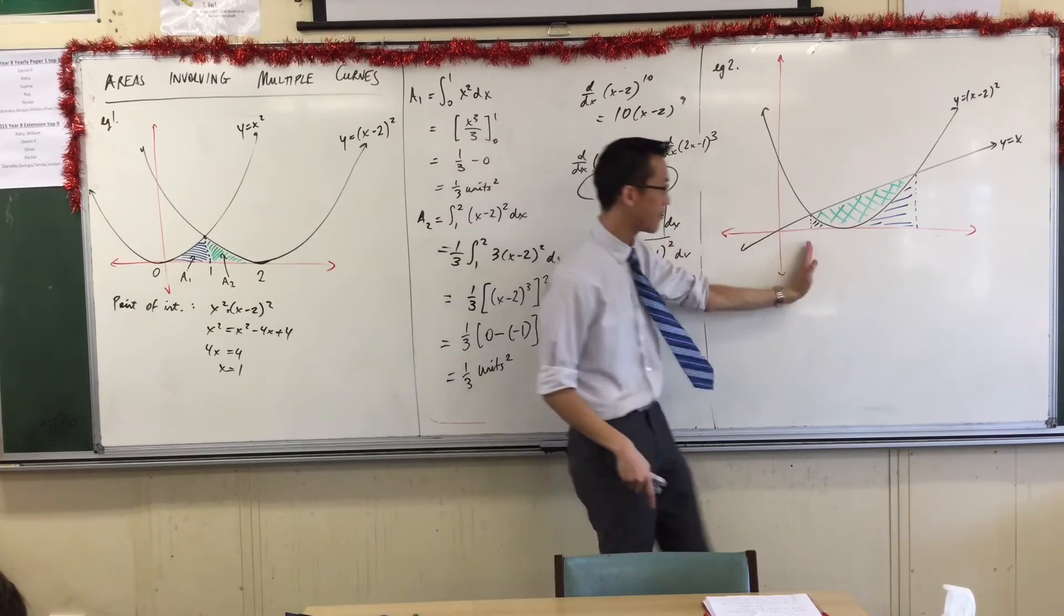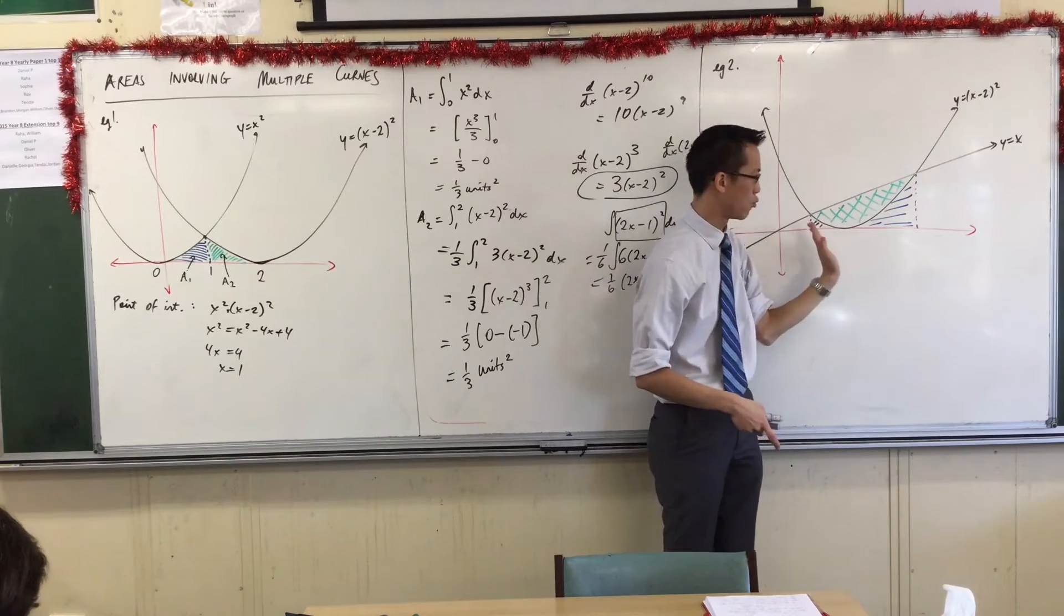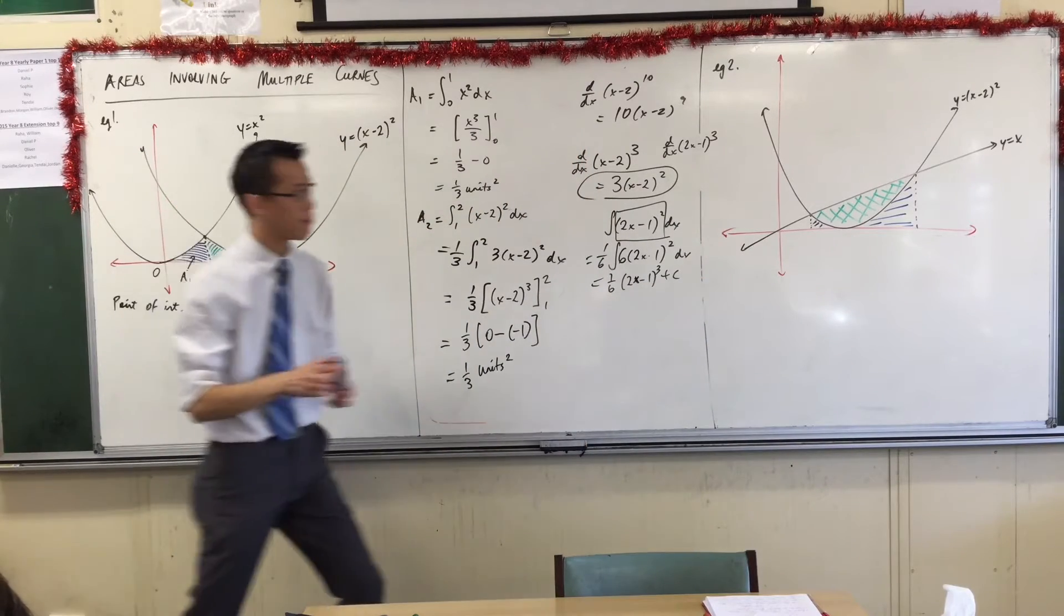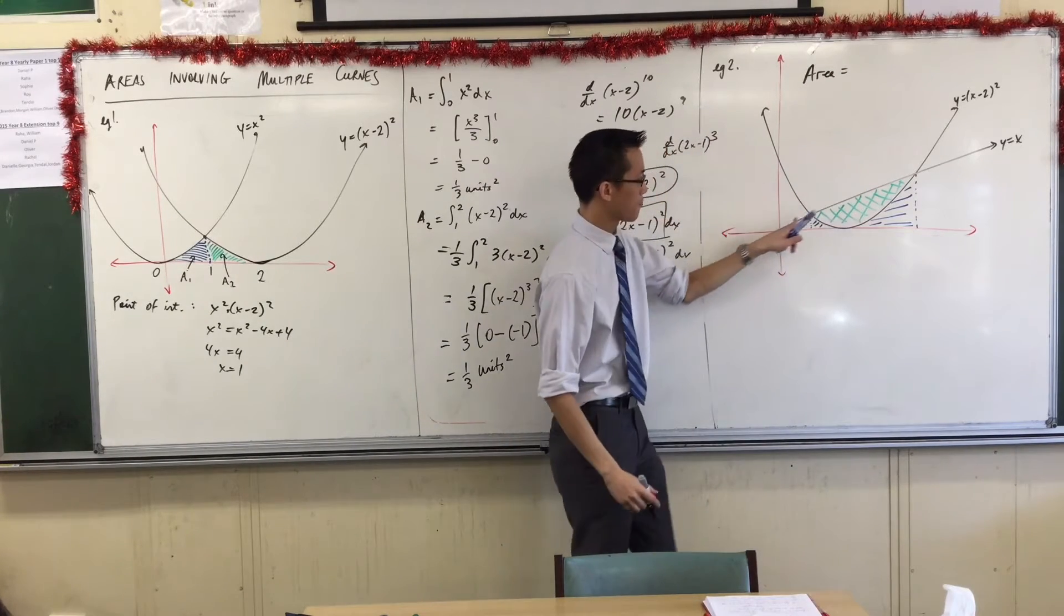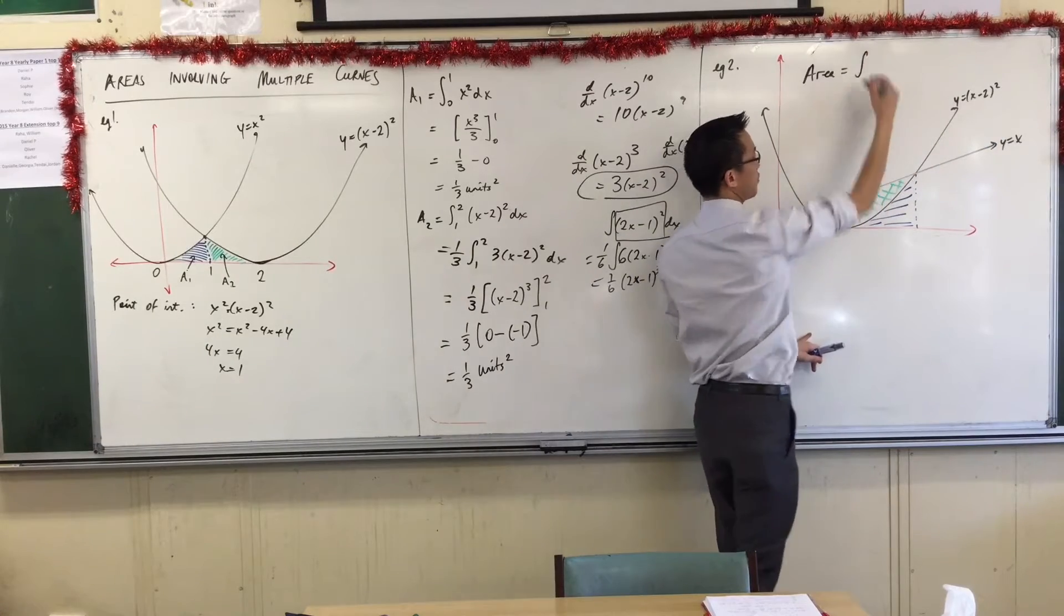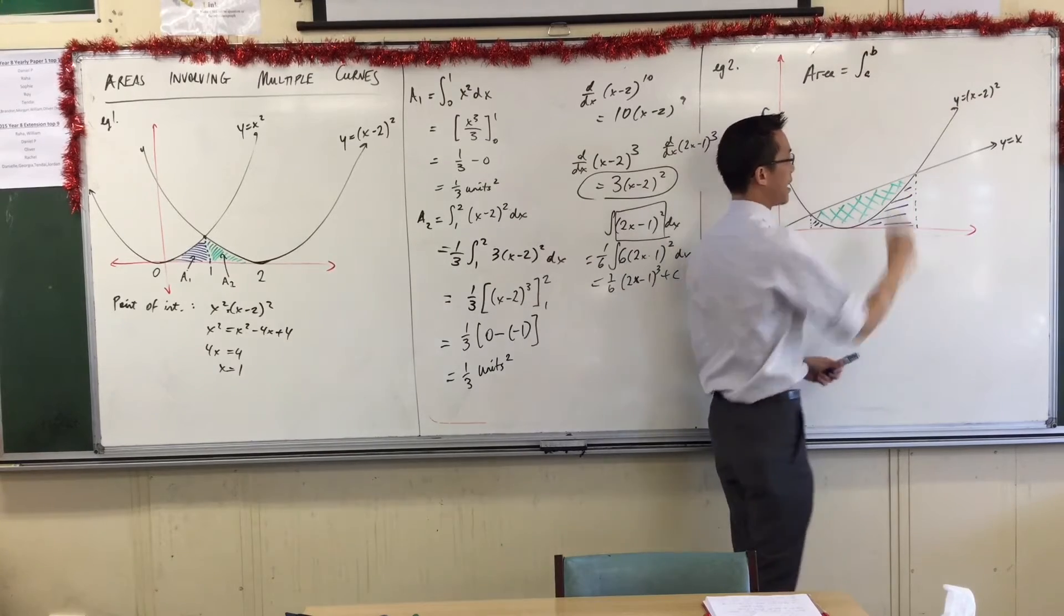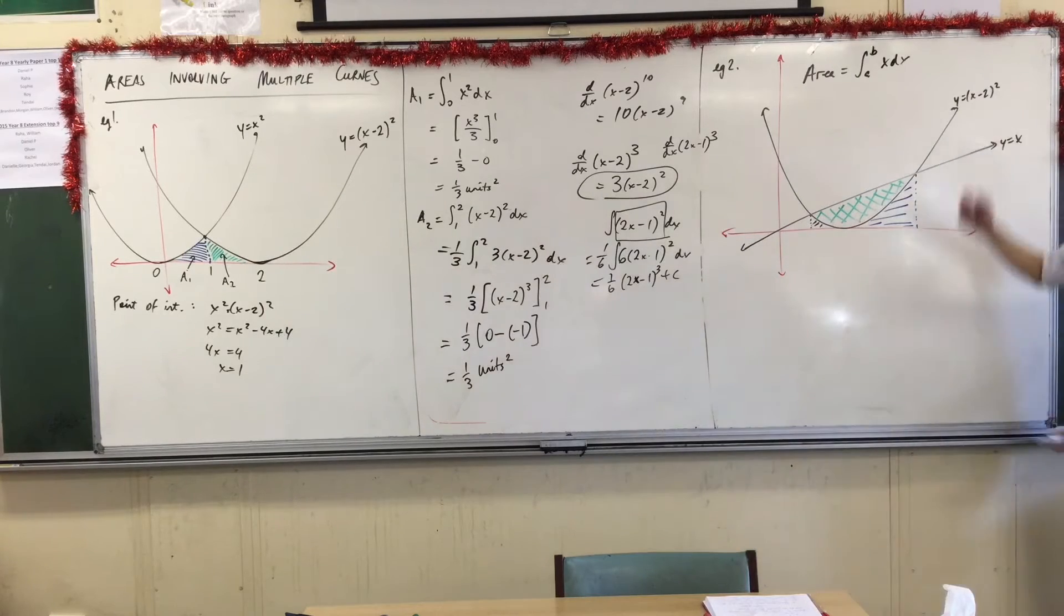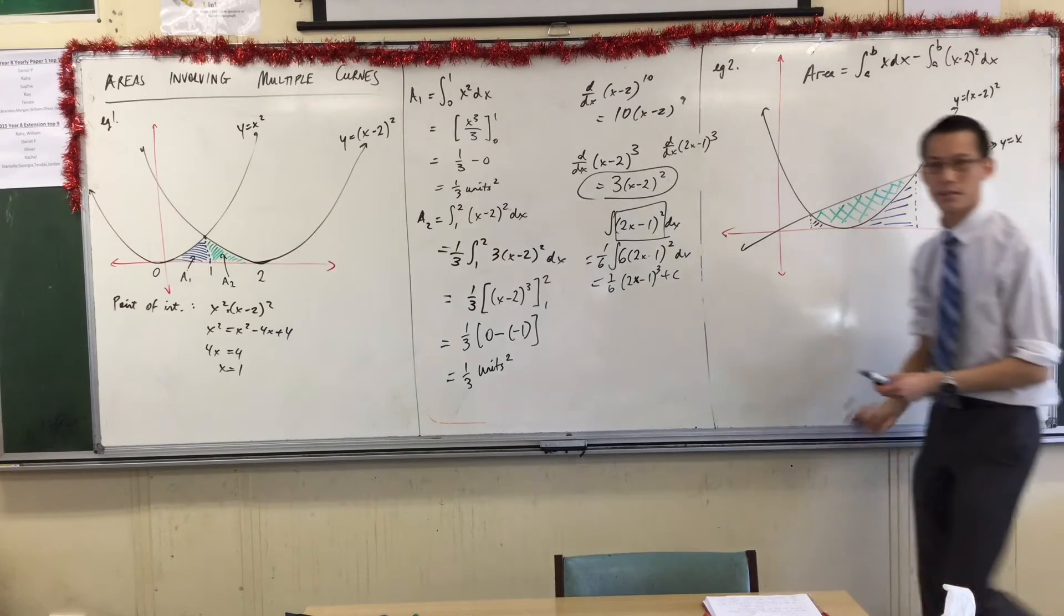So, in the same boundaries, again, from A to B, to get the blue area, I just need to integrate this guy from whatever that is to whatever that is. Now, think about that. The area I want is the integral of this one, the integral from A to B of x. That will give me the trapezium. And then I need to subtract the other area, which is, again, from A to B of x minus 2 squared dx.